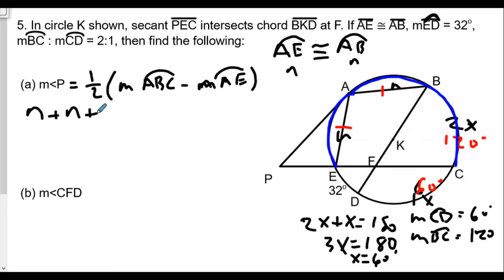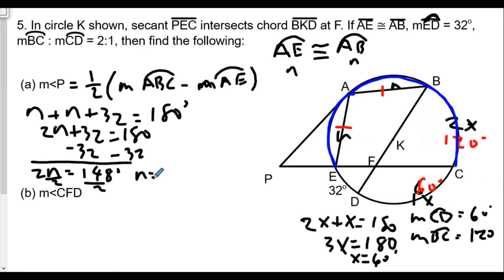We have n plus n plus 32 equals 180 degrees. How do we know? Because the semicircle arc BAED is going to have 180 degrees since diameter BKD divides the circle in half. So we have 2n plus 32 equals 180. Subtracting 32 from both sides, we get 2n equals 148 degrees. Therefore, divide both sides by 2, n must equal 74 degrees.